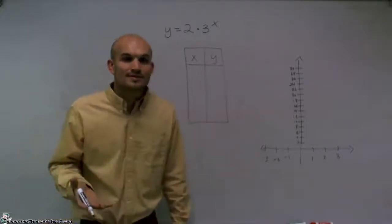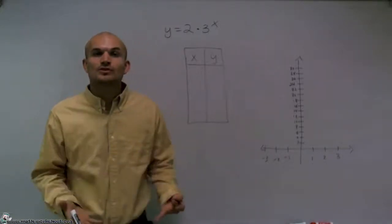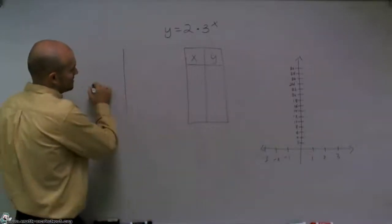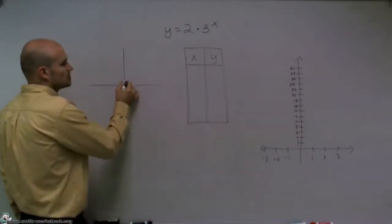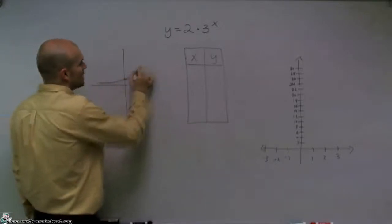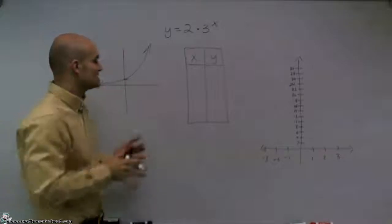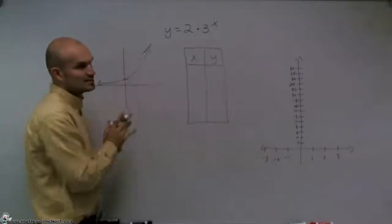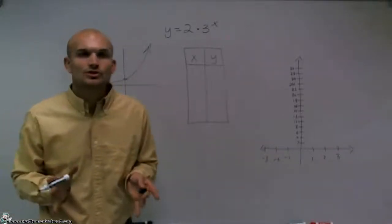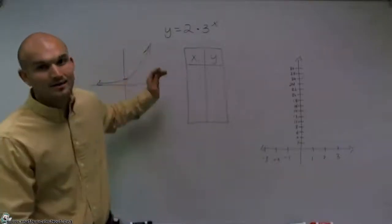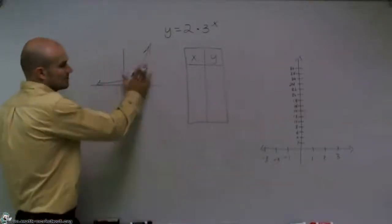It is important to understand at least what the relationship of the graph is going to look like. You don't need to know it exactly, but for an exponential function, you should understand that the graph is going to look something like this. So as long as I can predict what the behavior is, whatever points I'm going to choose are going to allow me to create the path of this equation.